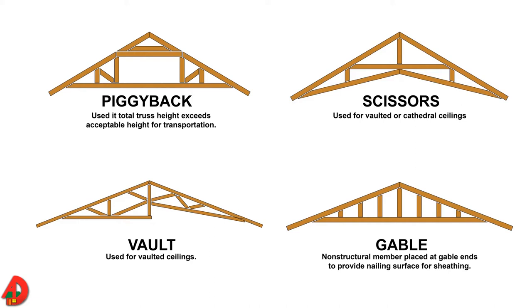Douglas fir and southern pine are two wood species most commonly used in truss fabrication. Sitka spruce, lodgepole pine, ponderosa pine, and western balsam fir are also acceptable species.